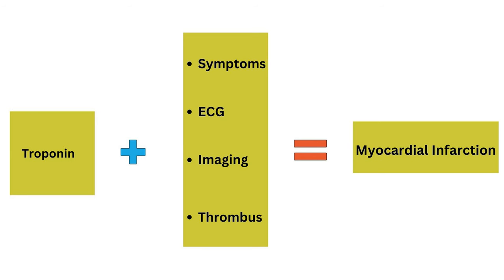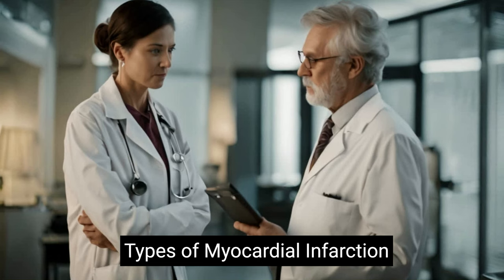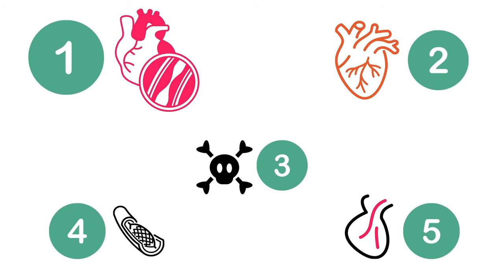Based on the latest universal definition, diagnosing MI requires an increase or decrease of cardiac biomarkers — preferably high-sensitivity cardiac troponin T or I — with at least one value above the 99th percentile of the upper reference limit. In addition, at least one of the following is needed: symptoms of myocardial ischemia, new ischemic ECG changes, development of pathological Q waves, imaging evidence of new loss of viable myocardium or wall motion abnormalities, or an intracoronary thrombus detected by angiography or autopsy.